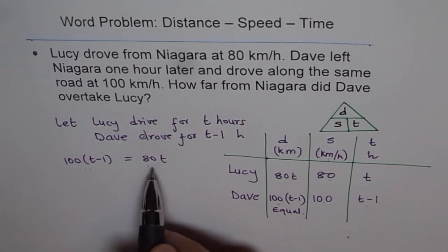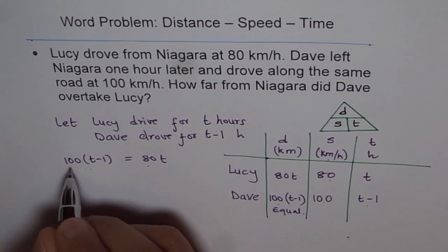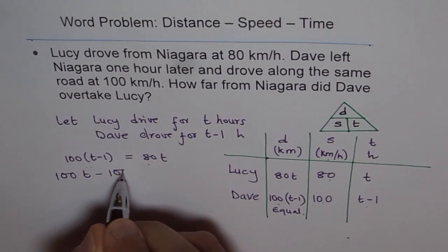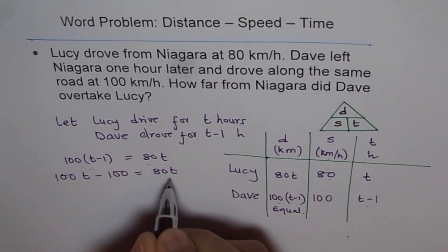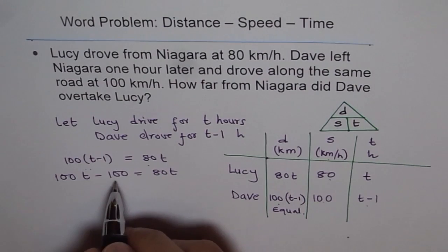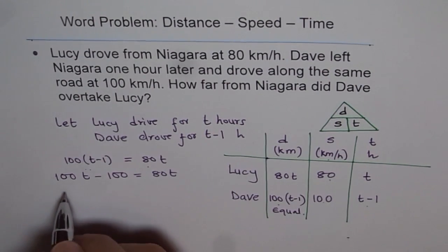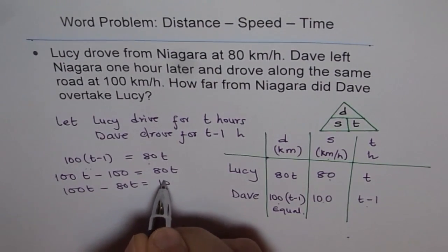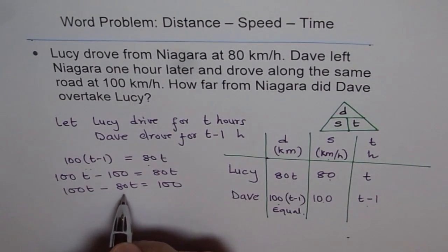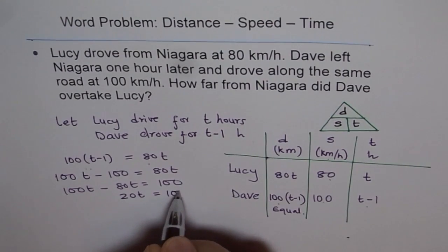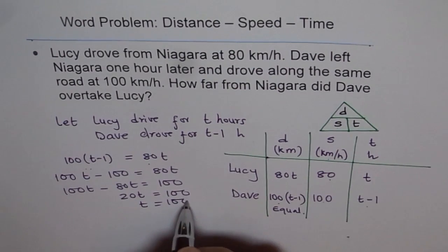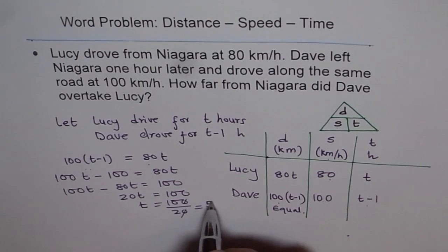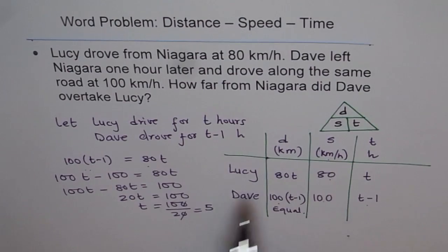We have one variable and one equation, which can be solved easily. Expanding the bracket: 100T minus 100 equals 80T. Bringing variables to the left and constants to the right: 100T minus 80T equals 100, so 20T equals 100, giving T equals 100 divided by 20, which is 5. So Lucy drives for 5 hours when Dave overtakes her.